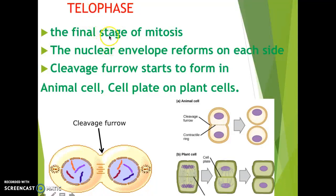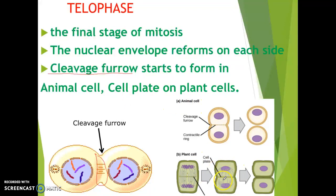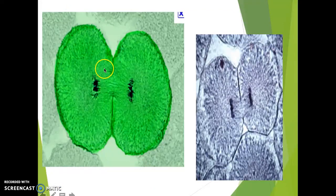The last phase of mitosis is telophase, where the nuclear envelope reforms on each side of the cell and a cleavage furrow forms between the two daughter cells being made. You can see the cleavage furrow forming in both animal and plant cells. In microscope pictures you can see a nucleus forming on each side, with the cleavage furrow in the middle and the two cells beginning to separate.